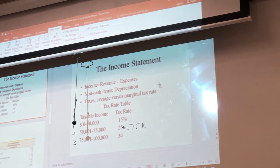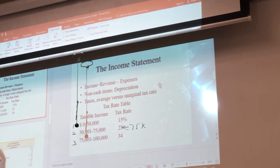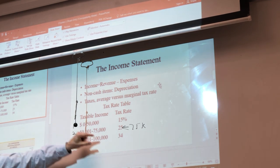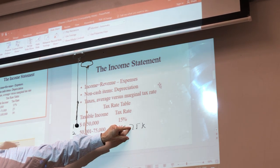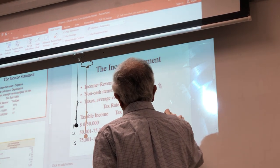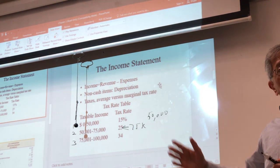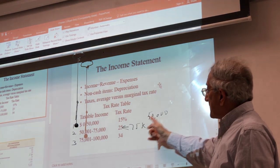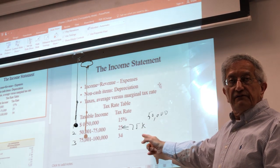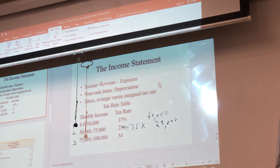What you have to do is split your $75,000 into two parts — the part that falls in the first bracket and the part that falls in the second bracket. The part that falls in the first bracket is $50,000. The remainder, which is $75,000 minus $50,000, is $25,000 — so $25,000 falls in the second bracket.